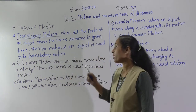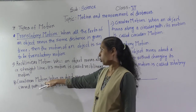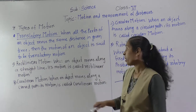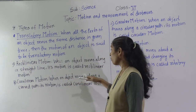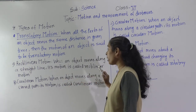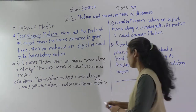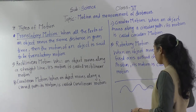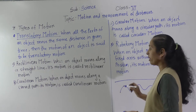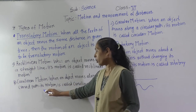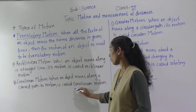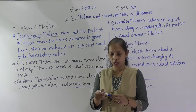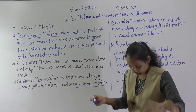The next type is Curvilineal Motion. When an object moves along a curved path, then the motion of that object is called Curvilineal Motion.